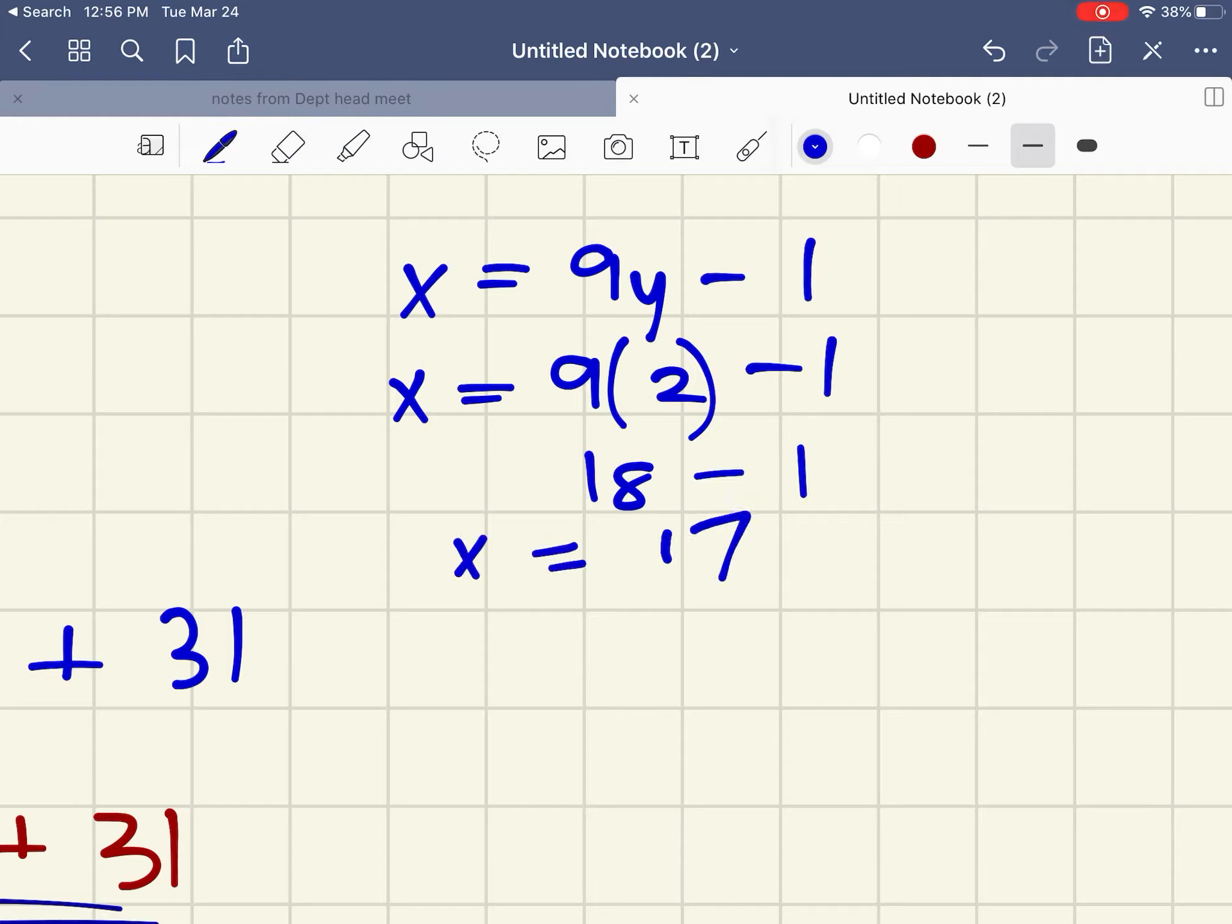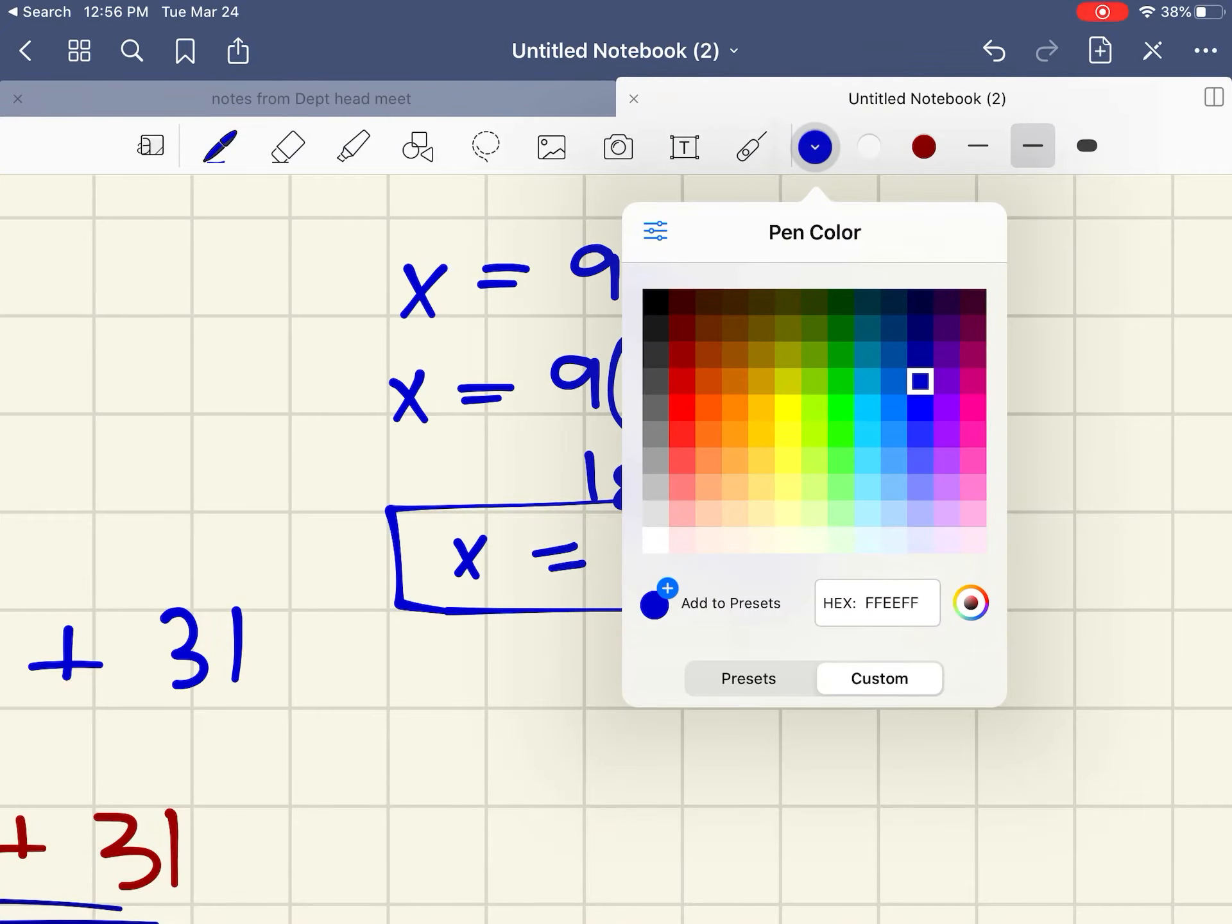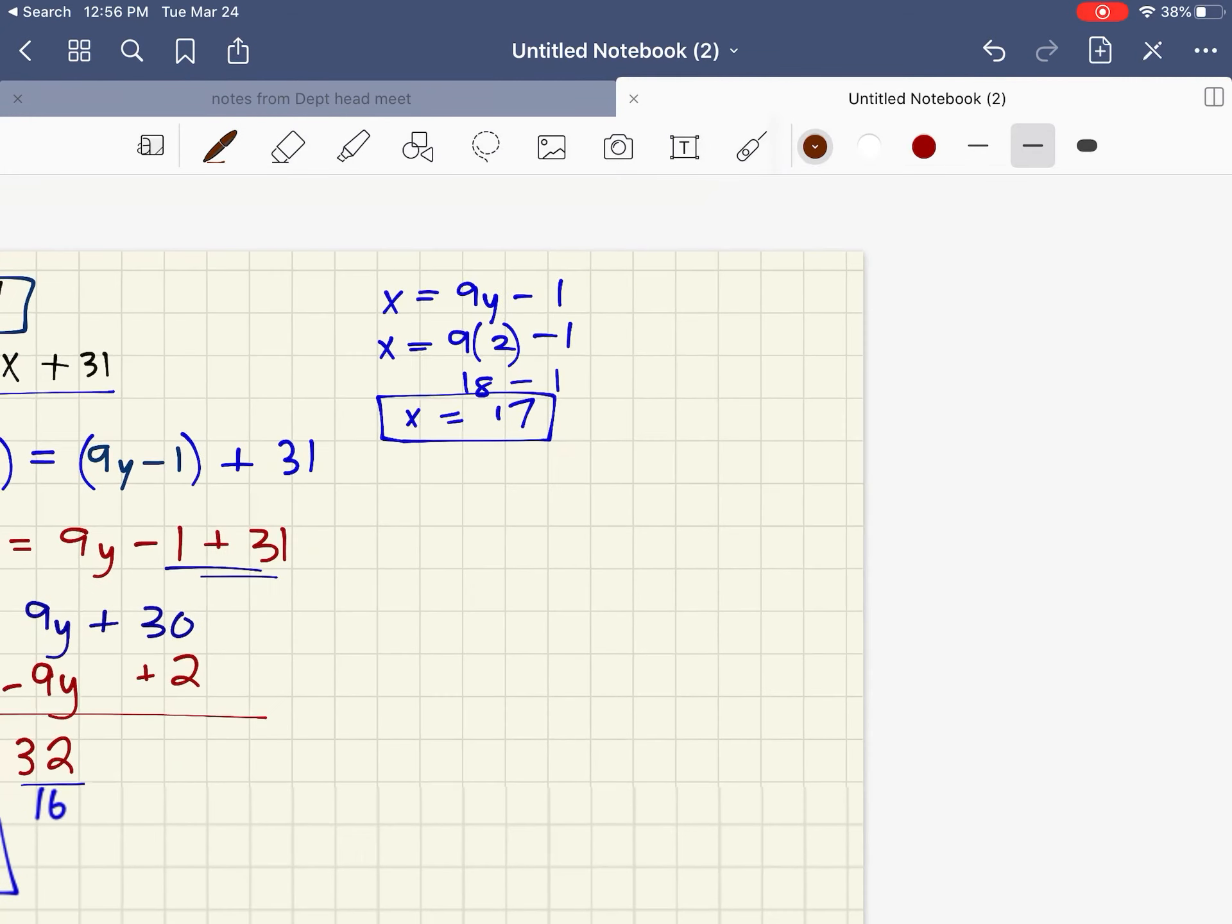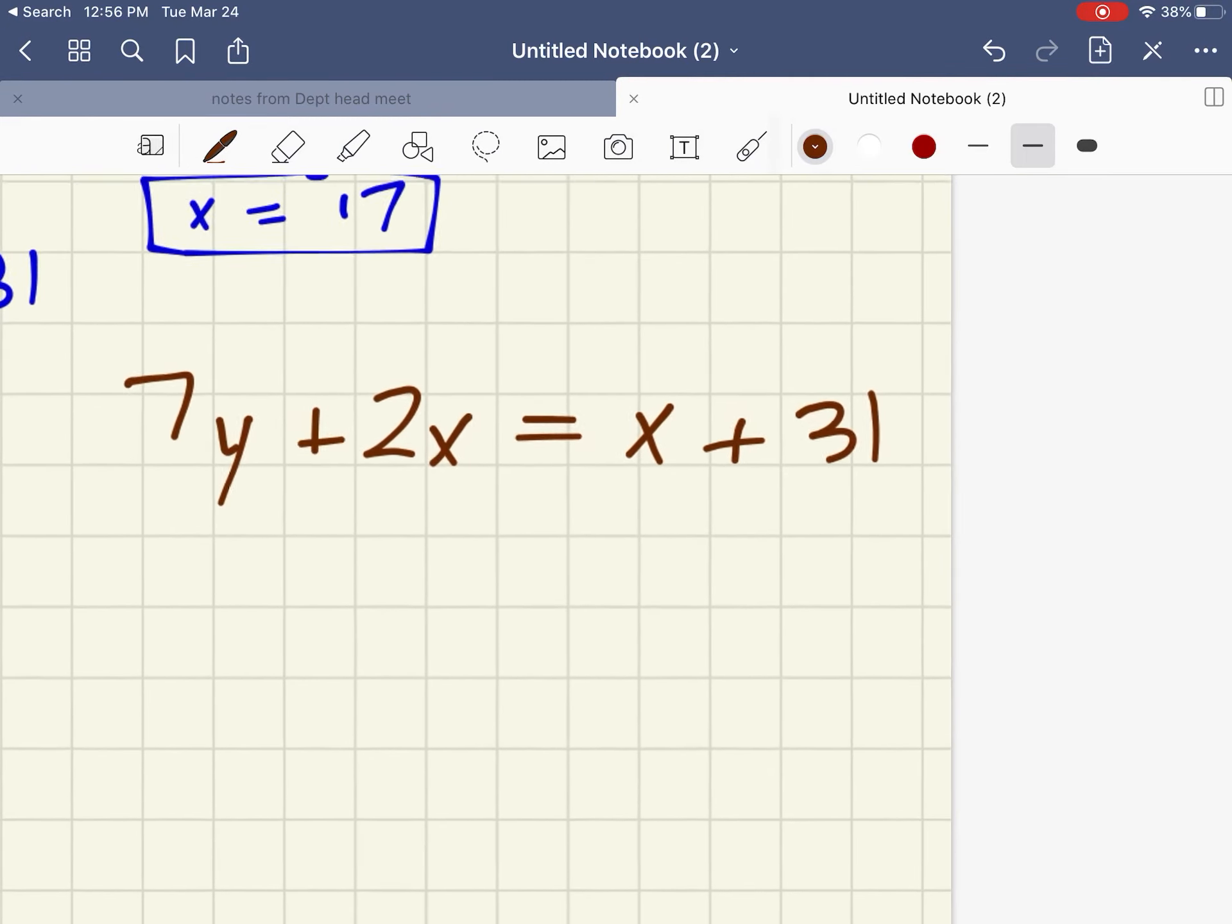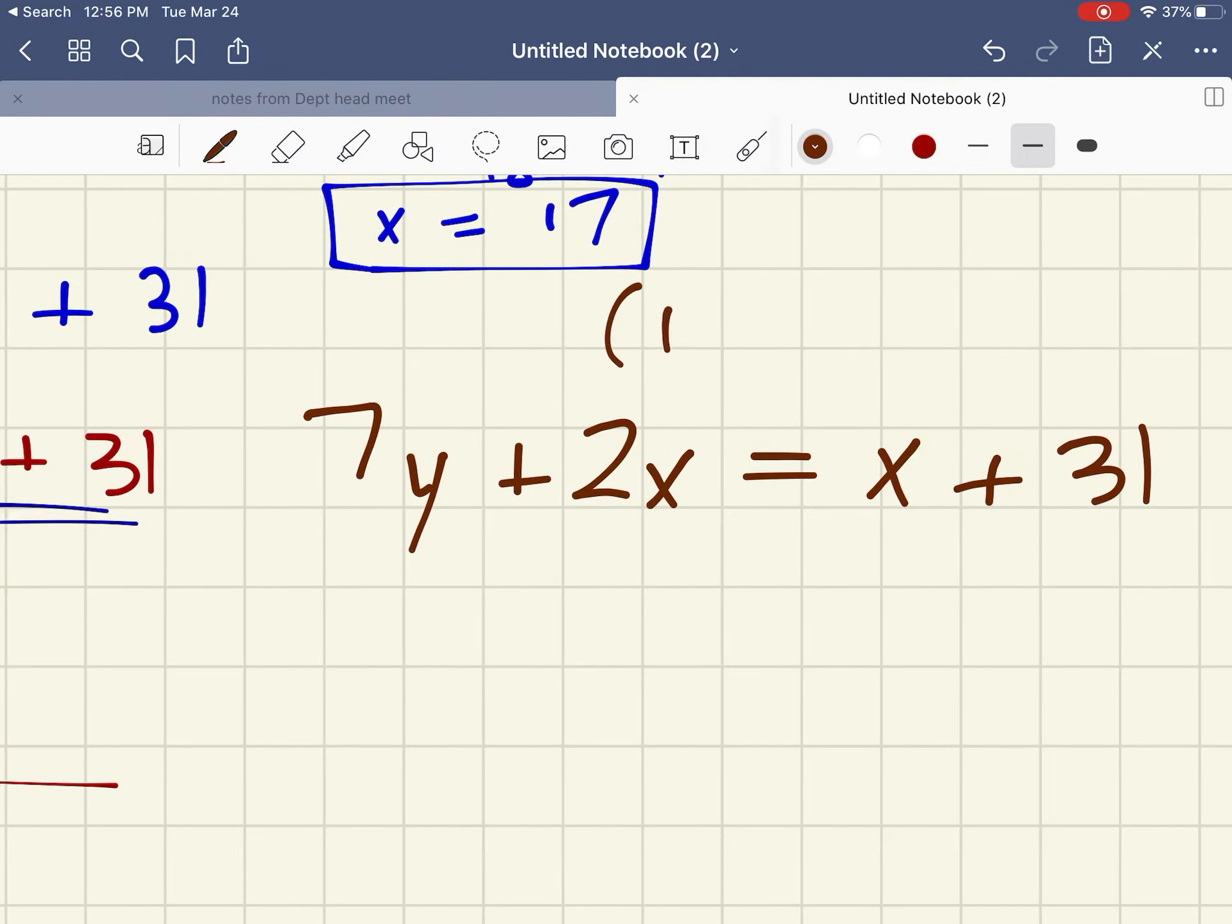So according to, if y is 2, then I think x is 17. And one of the benefits of solving a system in general is that you really should be able to figure out if you have the right answer or not by plugging it in to the remaining equation. So I think 17 comma 2 is my answer.